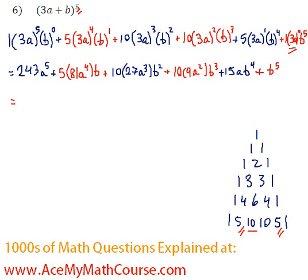First element, just 243 a to the 5. Next element, 5 times 81 is 405, a to the 4, b.